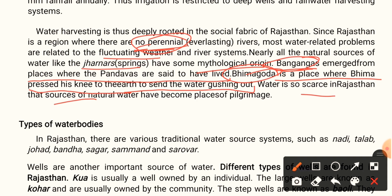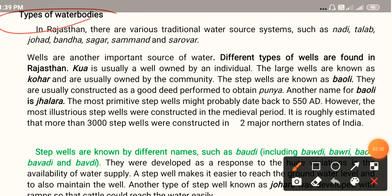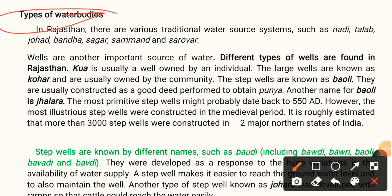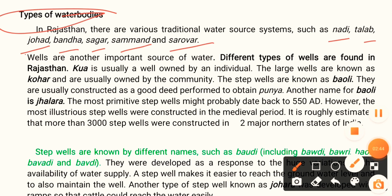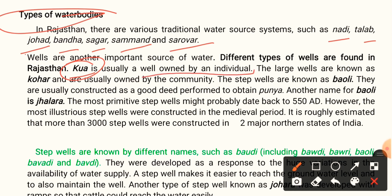There are various traditional water source systems in Rajasthan such as Nadir, Talaab, Johad, Band, Sagar, Samand, and Sarovar. Wells are another important source of water. Different types of wells are found in Rajasthan. A kuwa is a local name for a well usually owned by an individual. Large wells are known as kohar and are usually owned by the community.